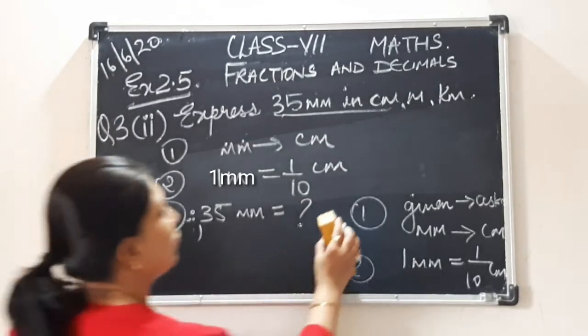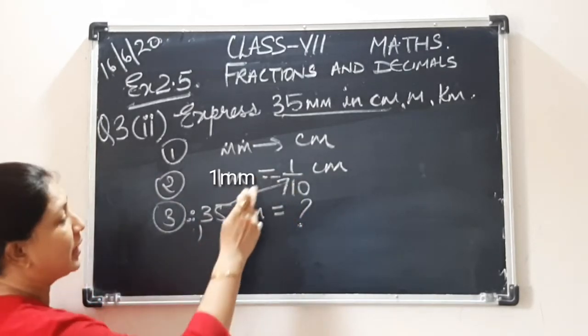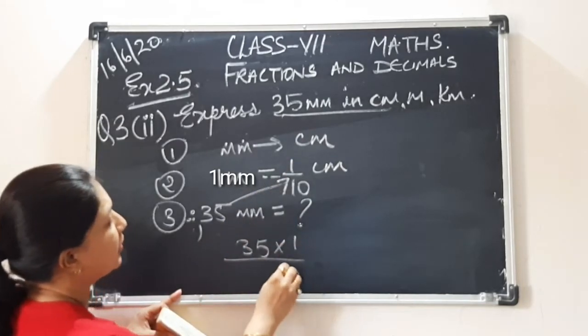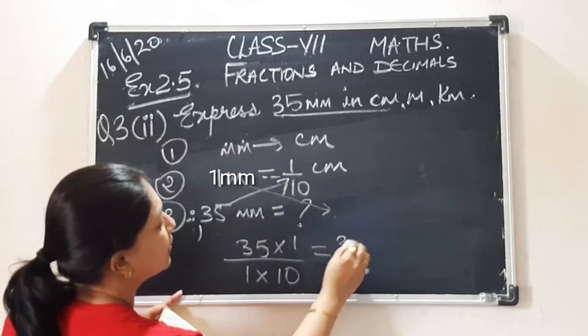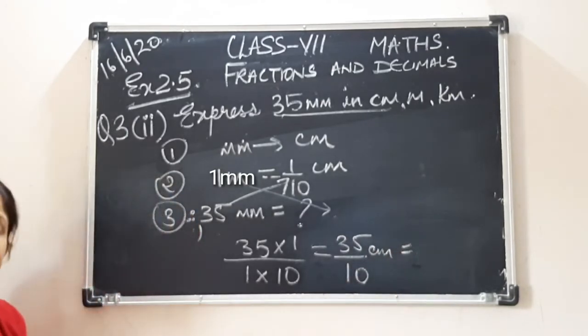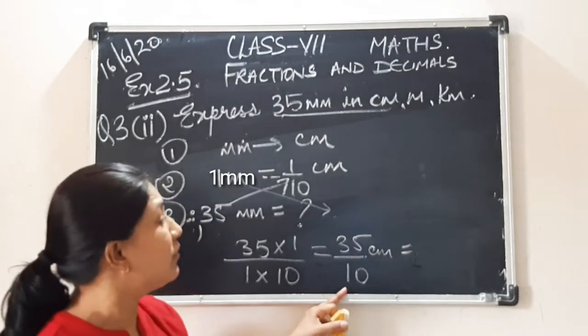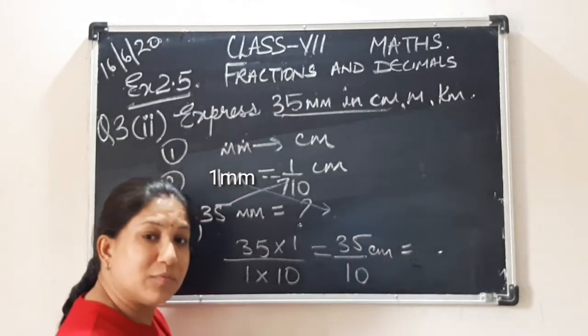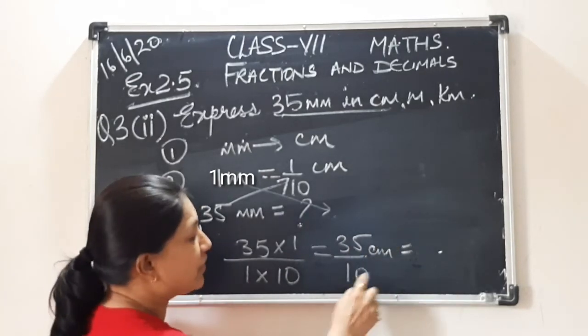Then what do you do? You will do the cross multiplication. 35 will go and get multiplied at numerator. So 35 will be multiplied by 1 upon 10. This one will come down. So here it is simply 1. Answer is 35 upon 10 centimeters. But this is in fractional form. They are asking to write down in decimal form. Correct? So what we will do? Make it in decimal form. It is so easy. This one is our point. Correct? We represent this by a dot.